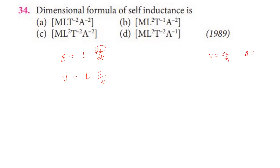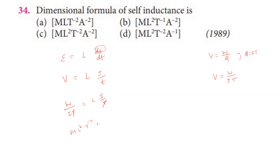Charge equals current into time. Potential equals work done divided by current into time. Setting potential equal to L times current divided by time: work done divided by current into time equals L times current divided by time. Time cancels. Work done dimension is ML²T⁻², and I gives A.